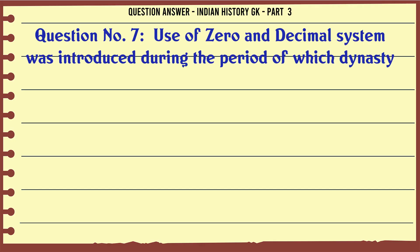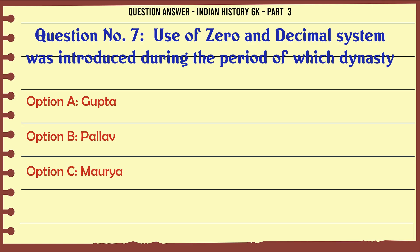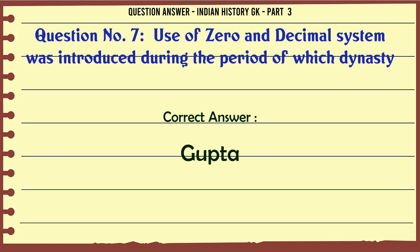Use of zero and decimal system was introduced during the period of which dynasty? A. Gupta, B. Pallava, C. Maurya, D. Kushan. The correct answer is Gupta.